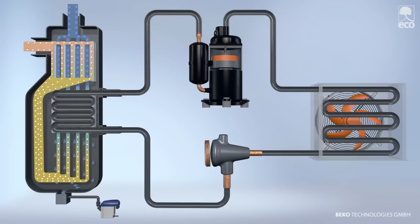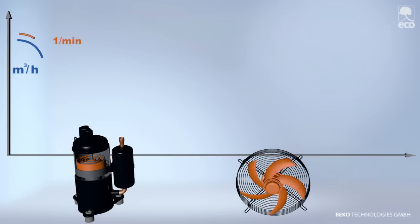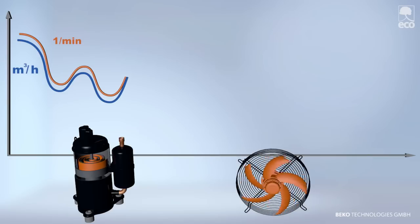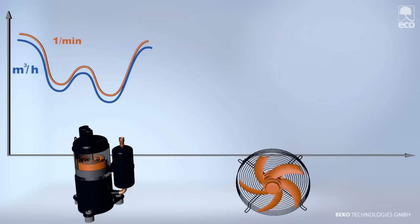In order to save energy when fluctuations in compressed air occur, such as flow volume, temperature, or pressure, the smaller versions of the Drypoint RA Eco switch the refrigerant compressor on and off to accommodate variations in the drying requirements.